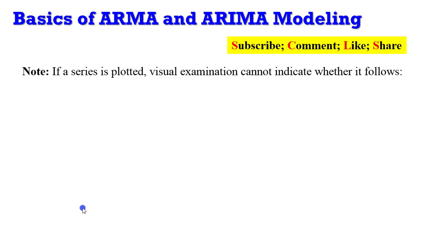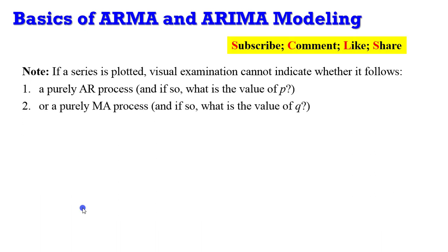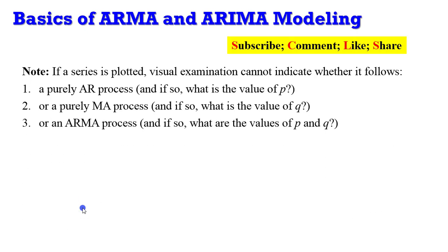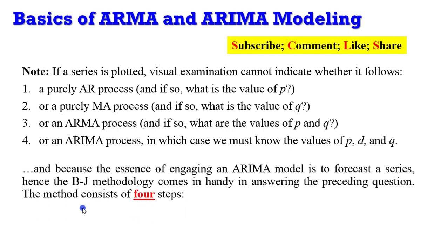When a series is plotted, visual examination cannot indicate whether it follows a purely AR process and what P would be, a purely MA process and what Q would be, an ARMA process, or an ARIMA process requiring values for P, D, and Q. Since the essence of ARIMA modeling is to forecast a series, the Box-Jenkins methodology comes in handy in answering these questions.